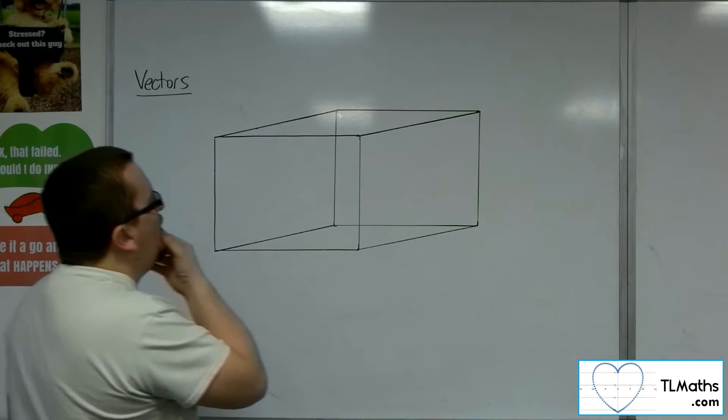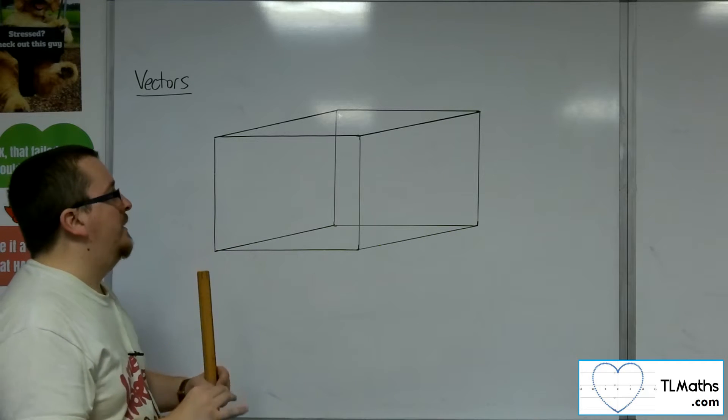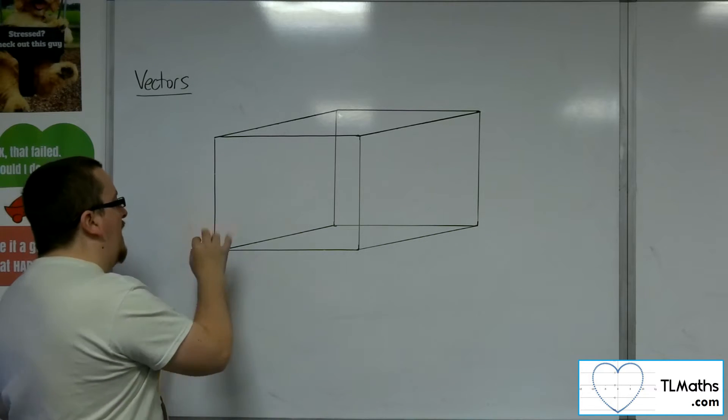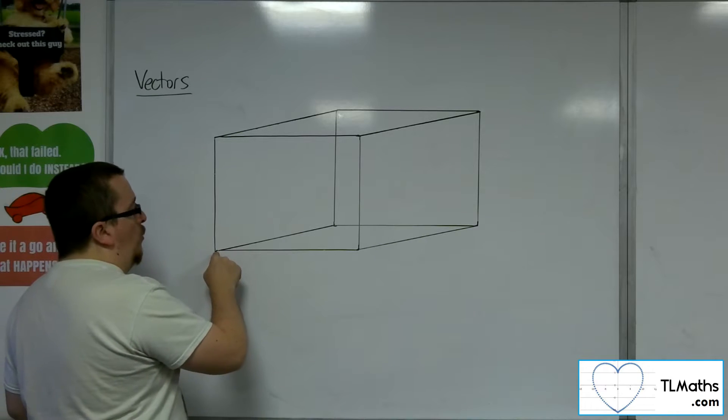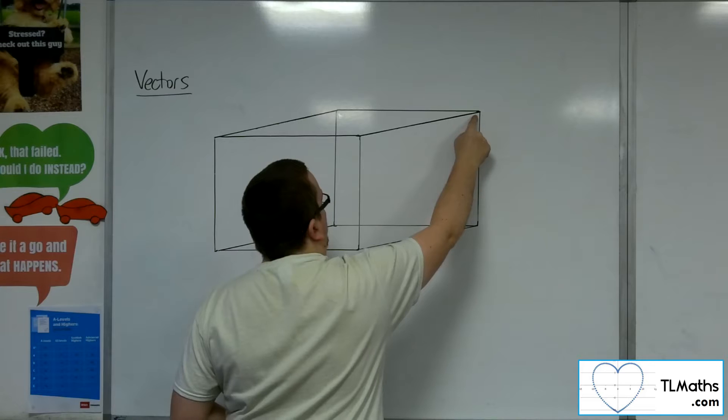So what I'm going to use as representing the vector is a vector that goes from one corner of the room all the way to the opposite corner of the room.